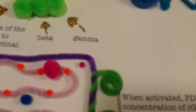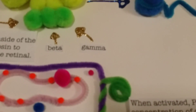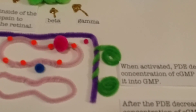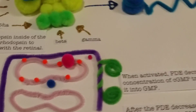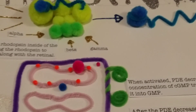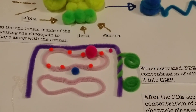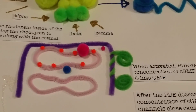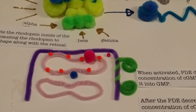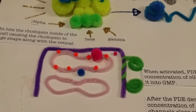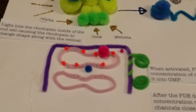Phosphodiesterase helps balance the concentration of cGMP and GMP. This little pink particle right here is cGMP. This is what keeps the sodium channels — the green objects on the side — open. And when the alpha subunit attaches to the phosphodiesterase, cGMP turns to GMP because the concentration is lowered. When the concentration is lowered, the sodium channels close, which causes a lack of sodium ions in the rod cell, which causes hyperpolarization. This is when the rod cell turns off.